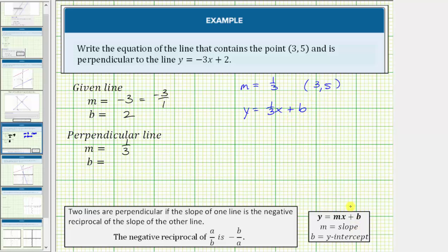Remember, b is the y-intercept, so b is not equal to 5 because this ordered pair is not the y-intercept. However, this is a point on the line, which means it must satisfy the equation. So we can substitute 3 for x, 5 for y, and then solve for b.